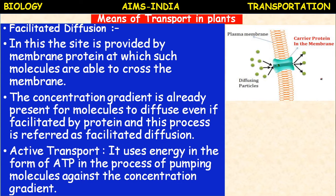Facilitated diffusion is also a passive process - there is no utilization of energy. It depends on carrier proteins and channel proteins. Carrier proteins bind the particular solute to be transported. Some carrier proteins allow two types of molecules to move across the membrane, called co-transport - symport, antiport, uniport. Channel proteins allow the diffusion of solutes by two ways: ion channels and porins.